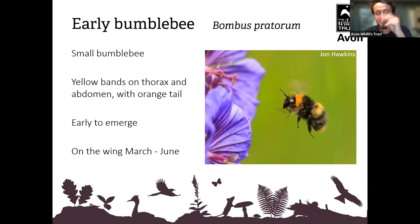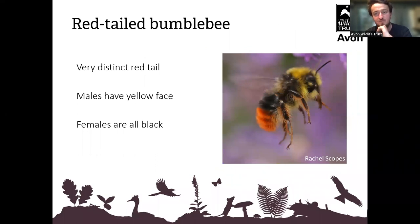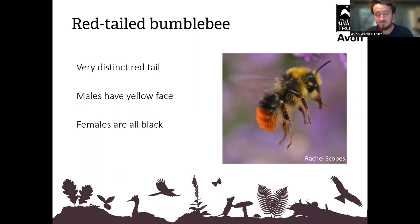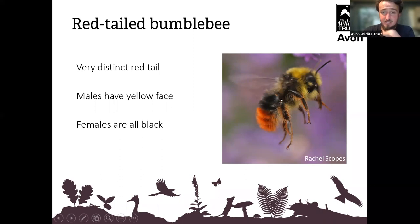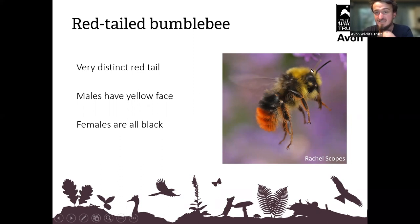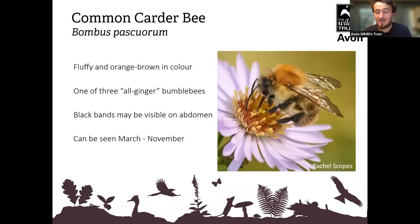Now the red-tailed bumblebee — this one very much does what it says on the tin. The females are all black other than a very distinctive red tail. The queens are quite big. The males have a yellow face and yellow fluff around the front end — so we can tell the male by the yellow face. Very handsome, very striking — the red-tailed bumblebee.